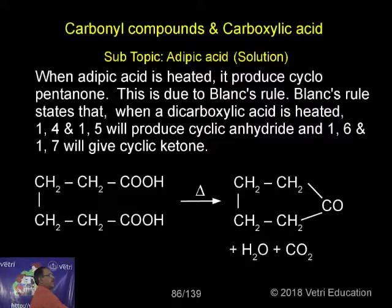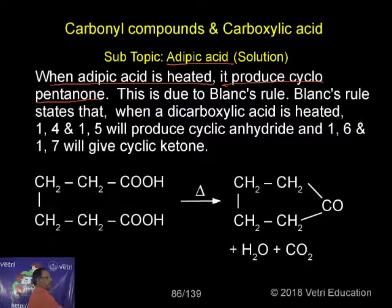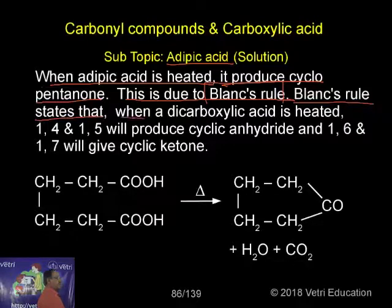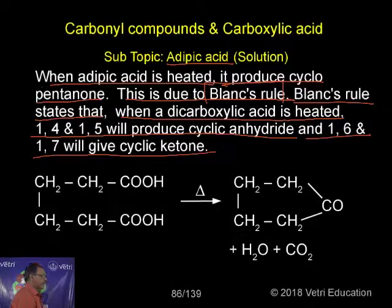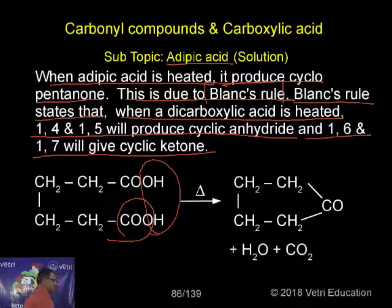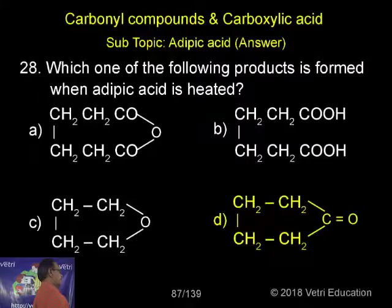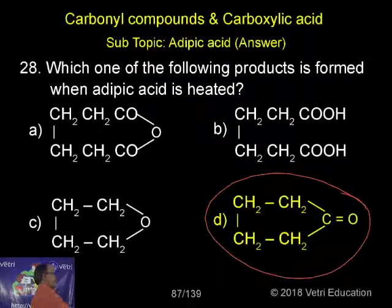So when this is the adipic acid, when adipic acid is heated, it will produce cyclic anhydride. This is due to Blanc's rule. Blanc's rule states that, when a dicarboxylic acid is heated, 1,4 and 1,5 will produce cyclic anhydride. And 1,6 and 1,7 will give cyclic ketone. But we kind of see, a carbon atom will be eliminated, water will be eliminated. This is connected to here. We will get a cyclic ketone, cyclopentanone, water and carbon dioxide. So correct answer is cyclopentanone.